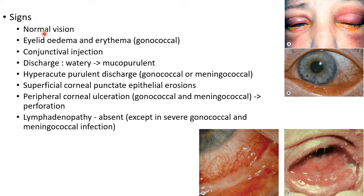The vision is usually normal. There will be eyelid edema and erythema, as you can see in this picture in case of gonococcal conjunctivitis. There will be conjunctival injection. The discharge will initially be watery. Later, it will be mucopurulent — this picture shows mucopurulent discharge in a case of acute bacterial conjunctivitis. There will be hyperacute purulent discharge in case of gonococcal or meningococcal conjunctivitis.